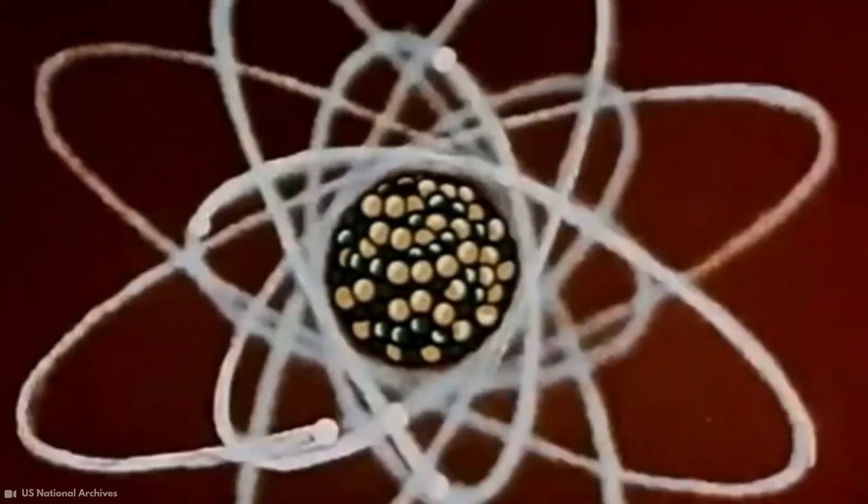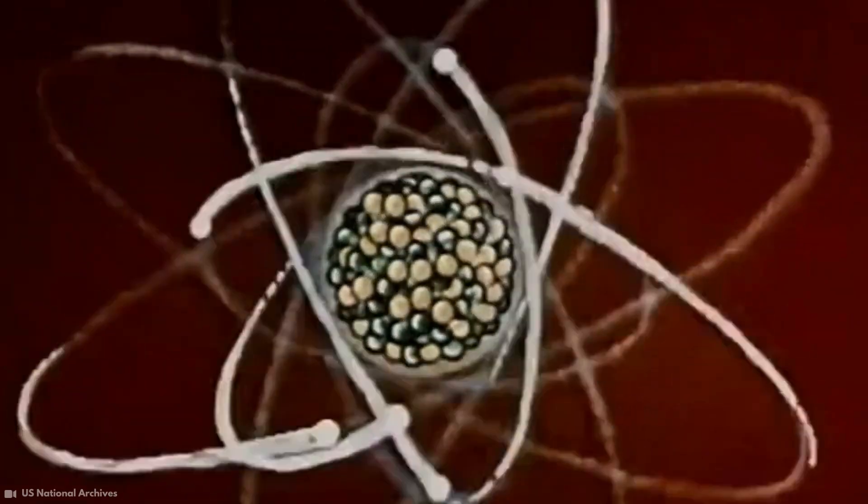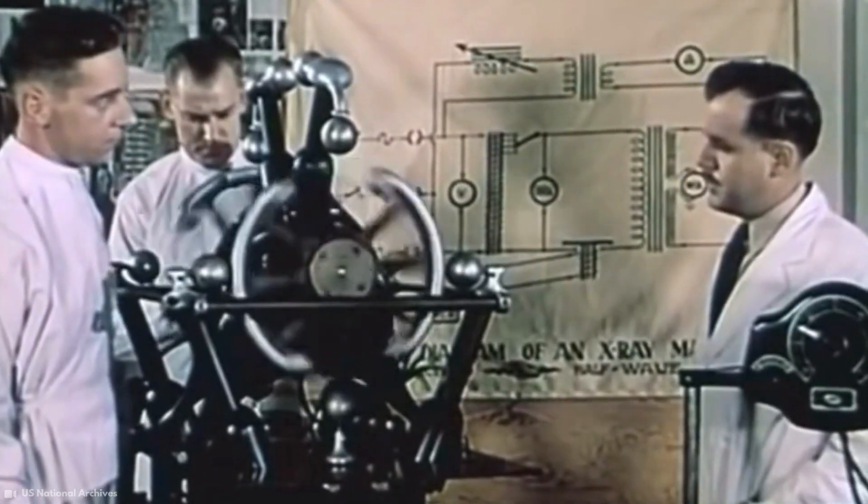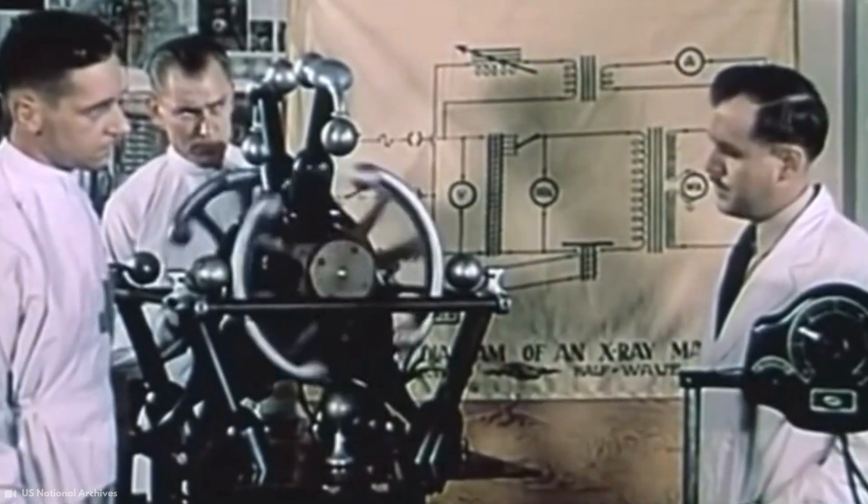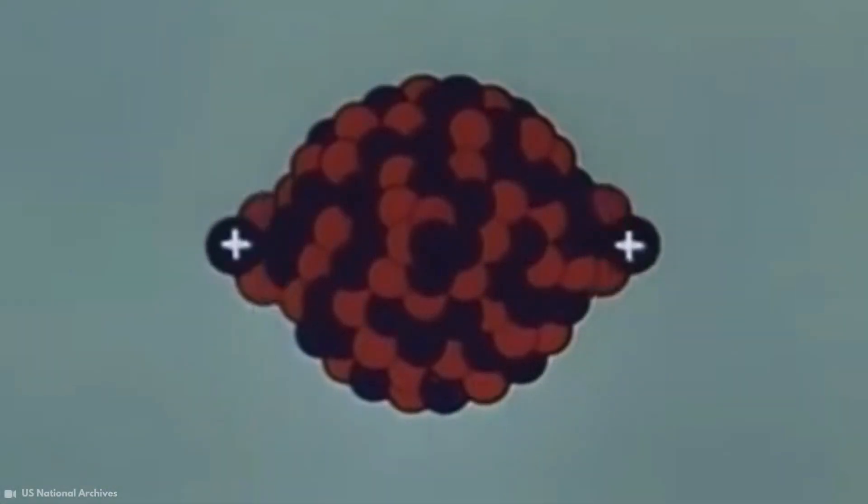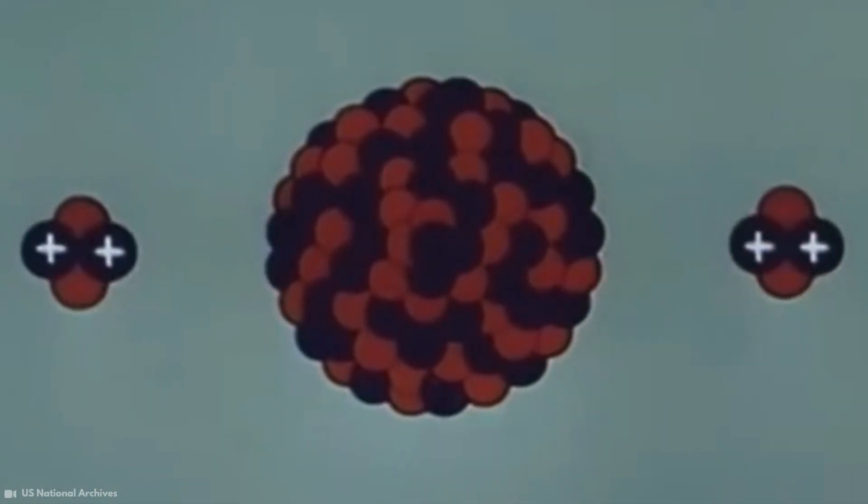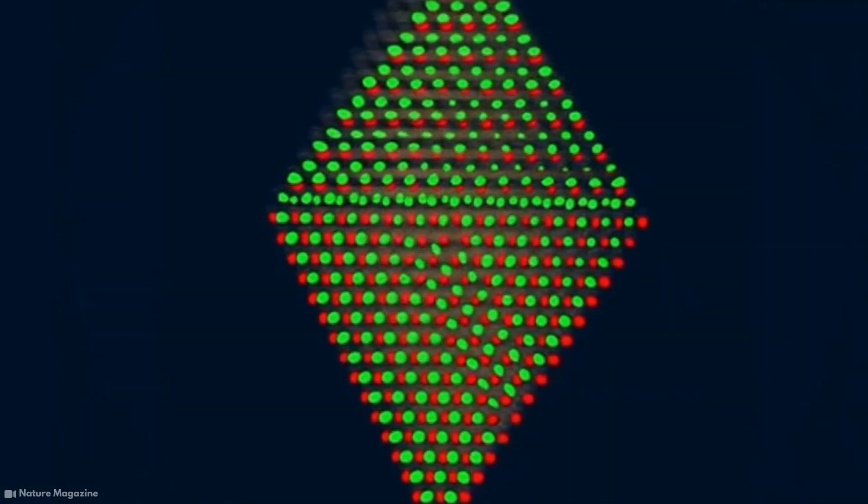Scientists once could not imagine that it would be possible to prove that matter consists of atoms. Many scientists even thought that matter was continuous and could not be broken down. Later, some scientists thought there would be a way to prove that matter is made of atoms, and they succeeded. Today it's a generally accepted fact that matter consists of atoms.